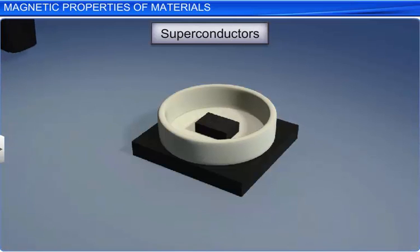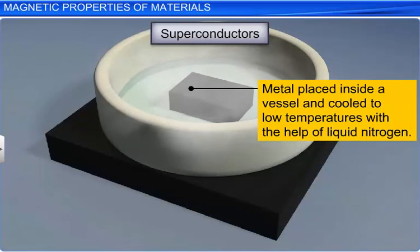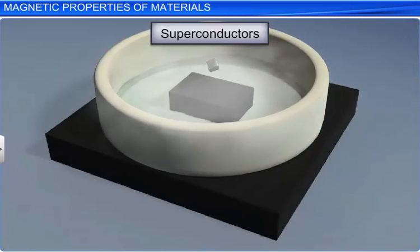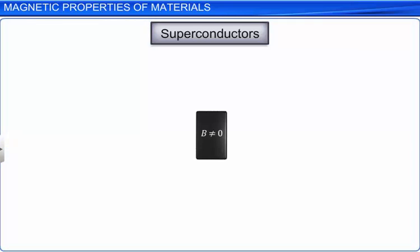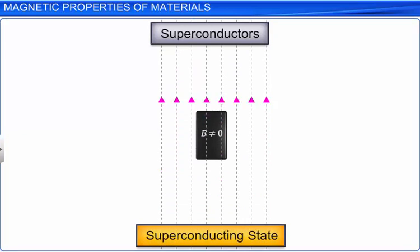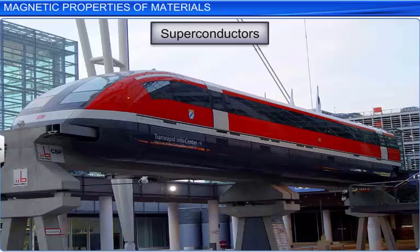Superconductors exhibit perfect diamagnetism. When a material is cooled below its transition temperature, it becomes a superconductor. In the superconducting state, the material behaves as a perfect conductor of electricity and a perfect diamagnetic material. When a material makes a transition from the normal state to the superconducting state, it actively excludes the magnetic field from its interior and hence repels magnets. This is called the Meissner effect. Maglev trains, or magnetically levitated superfast trains, work on the same principle.